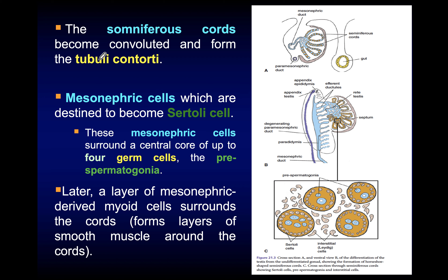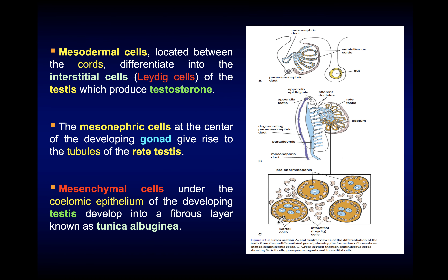The seminiferous tubules become convoluted, known as tubuli contorti. The mesonephric cells become the Sertoli cells, which surround the cords from outside, while the pre-spermatogonia remain in the core. Later, a layer of mesenchymal myoid cells surrounds these cords, responsible for forming smooth muscle around the seminiferous cord. The mesodermal cells at this level differentiate into interstitial Leydig cells, which are responsible for production of testosterone, but these cells will not be active until the animal reaches puberty.